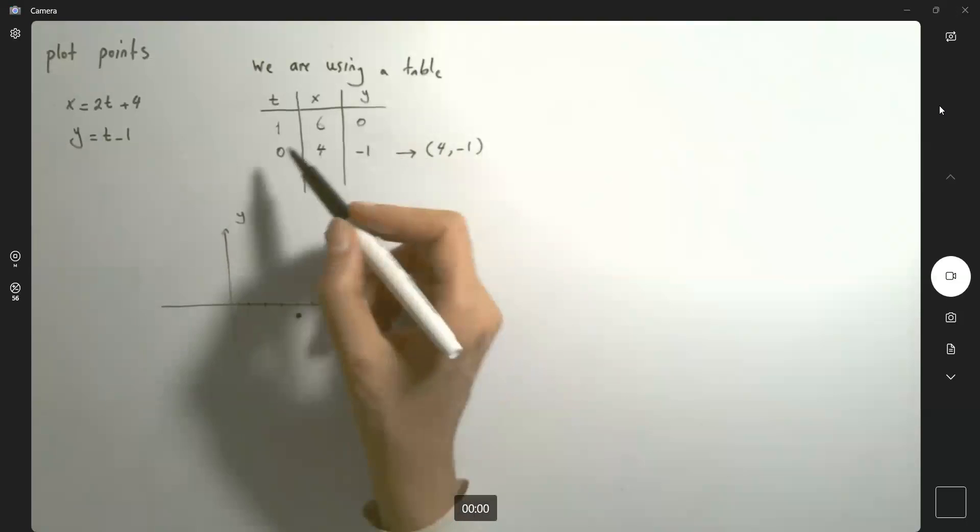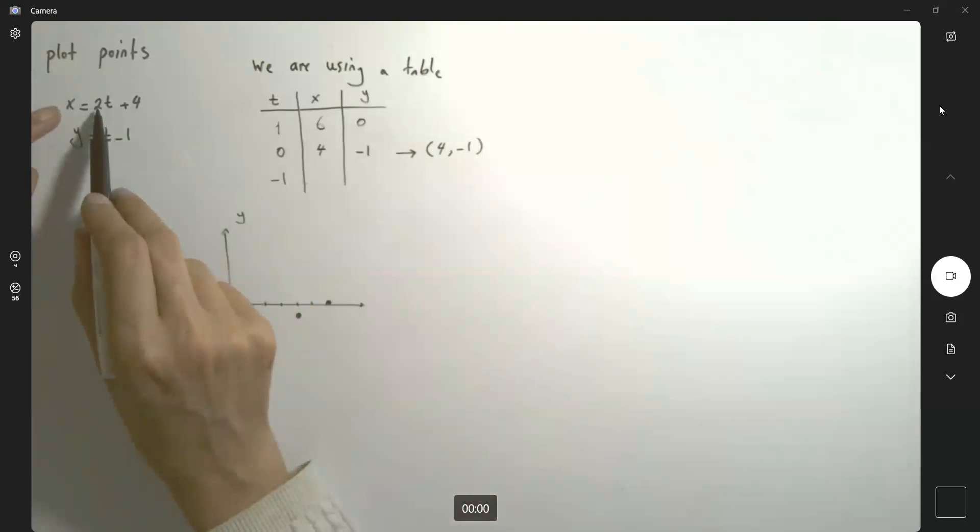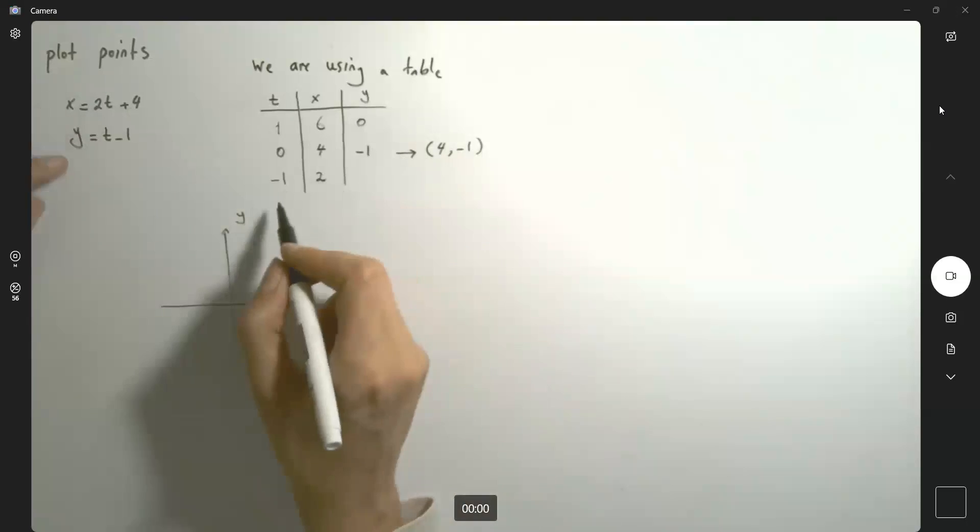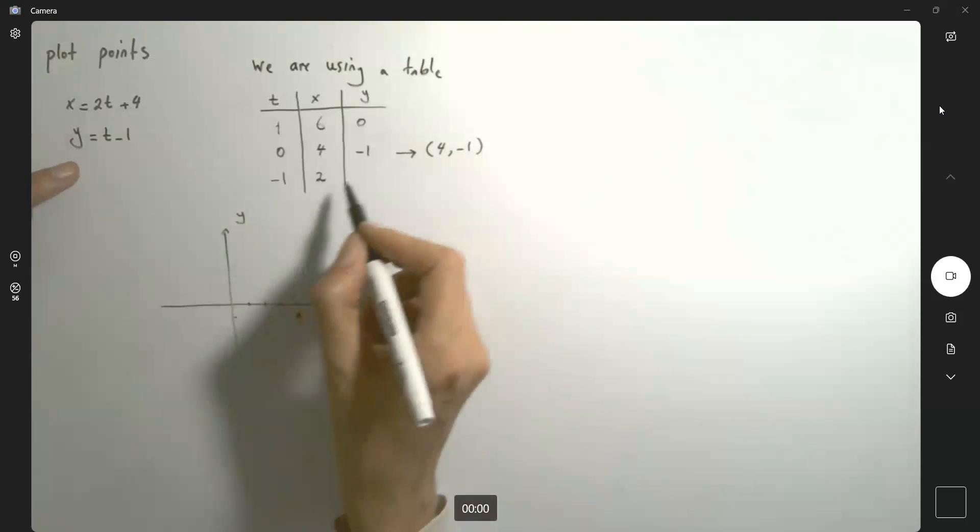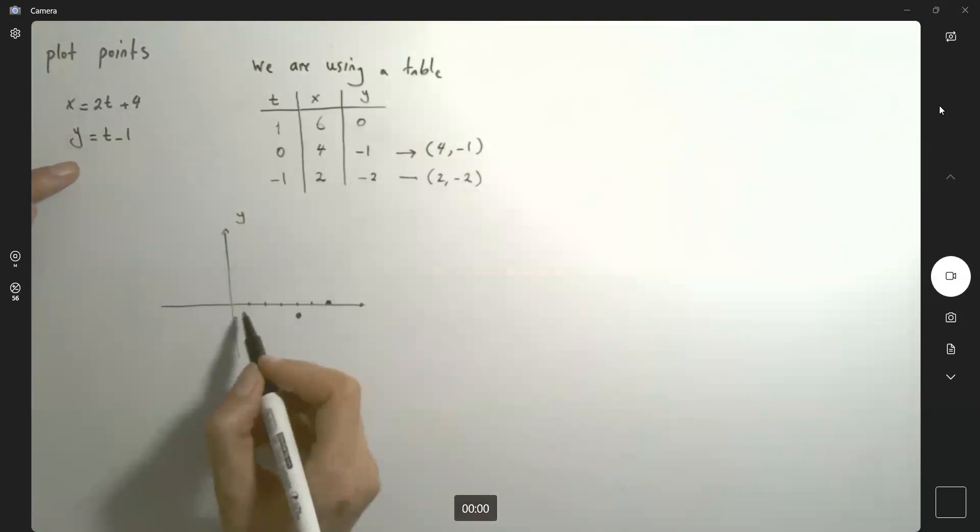You can plug in more values, right? Then, for example, plug in negative 1. If I plug in negative 1, it becomes 2 times negative 1, which is negative 2 plus 4, which is 2. And my y becomes negative 2. So here you have (2, -2). The behavior is going to be a line.